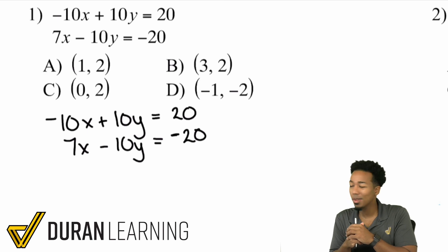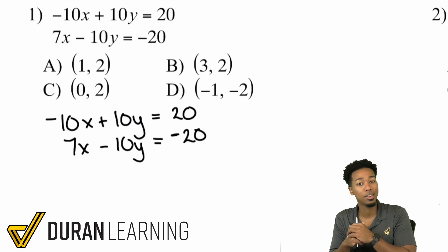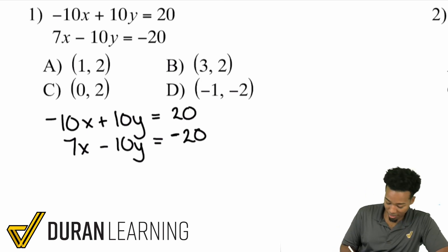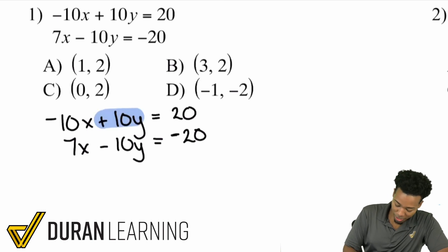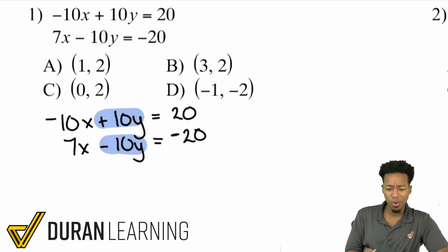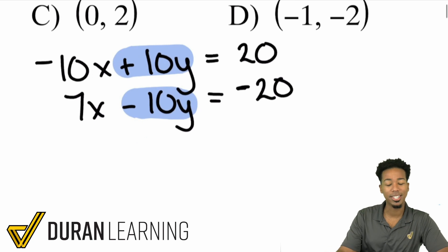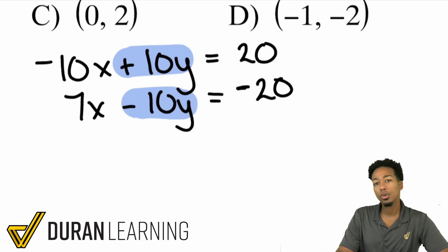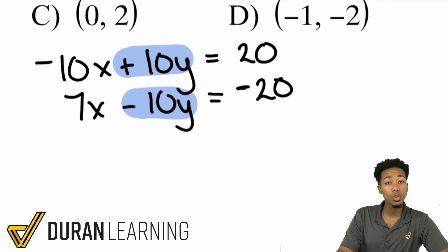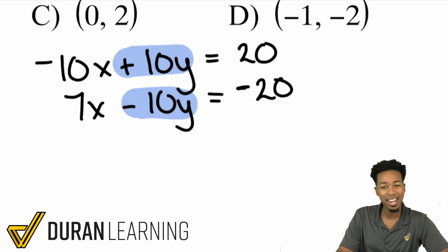Which one do you think it might be? Take a look — we have negative 10x plus 10y, and then we have 7x minus 10y. Which one do you think we can eliminate? If you're looking at the y variable, you are absolutely right. We're going to eliminate the y. But the question is how? What we're doing here is we are going to combine the equations — we're going to add them together.